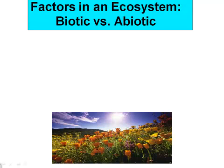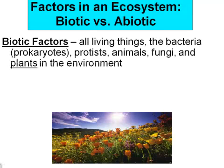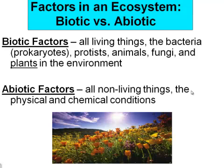We have several different factors in our ecosystem. We talked about the living and the non-living. Our biotic factors are all living things — bacteria, protista, animals, fungi, and plants. Our abiotic factors are all of our non-living things, the physical and the chemical conditions.